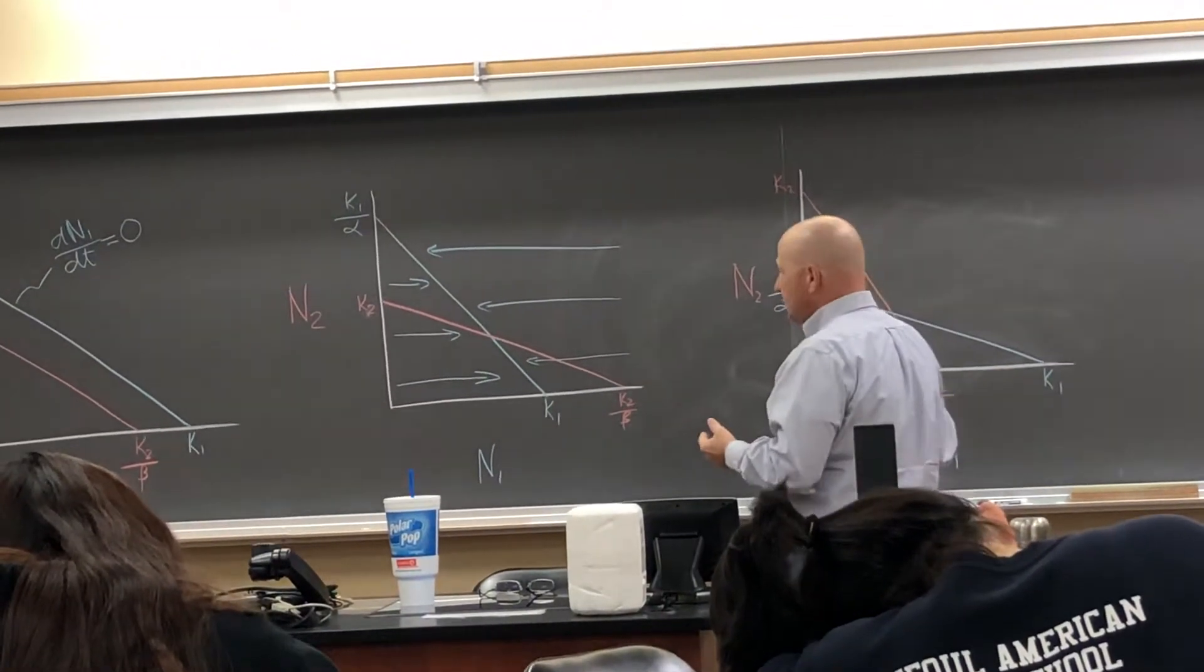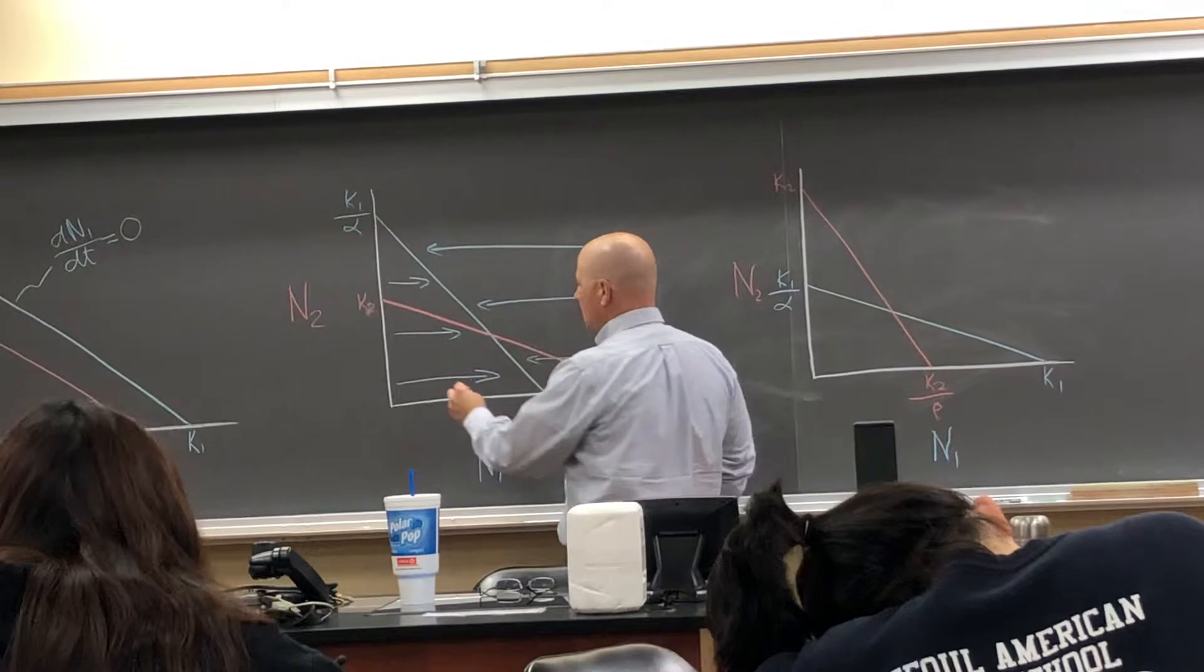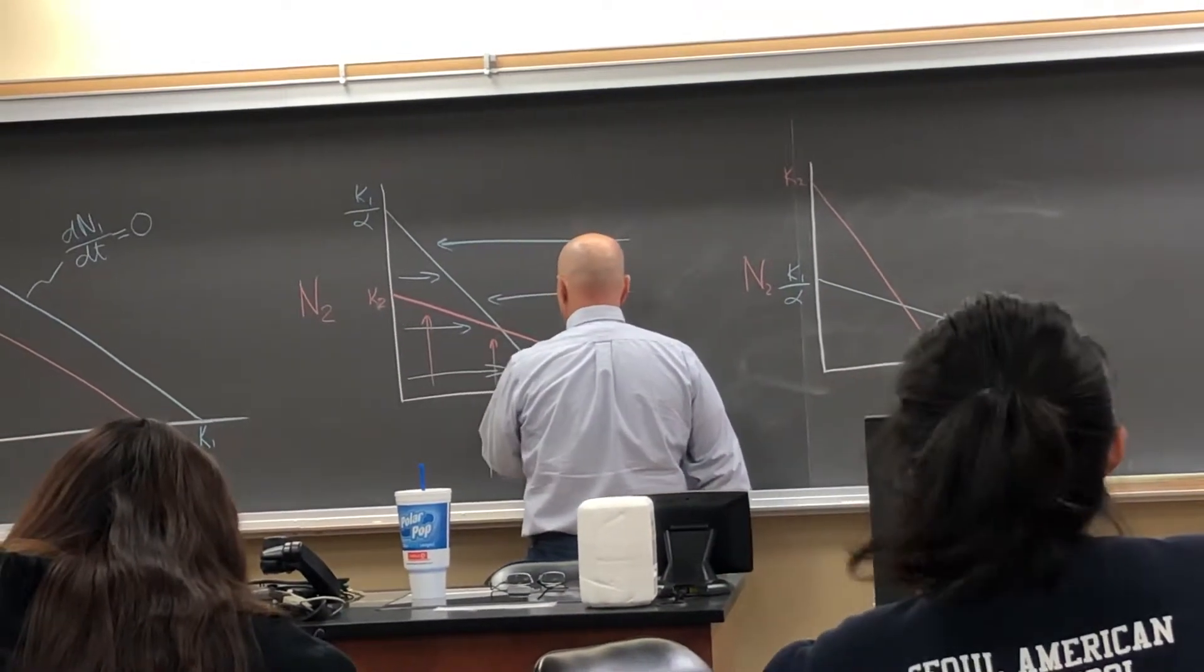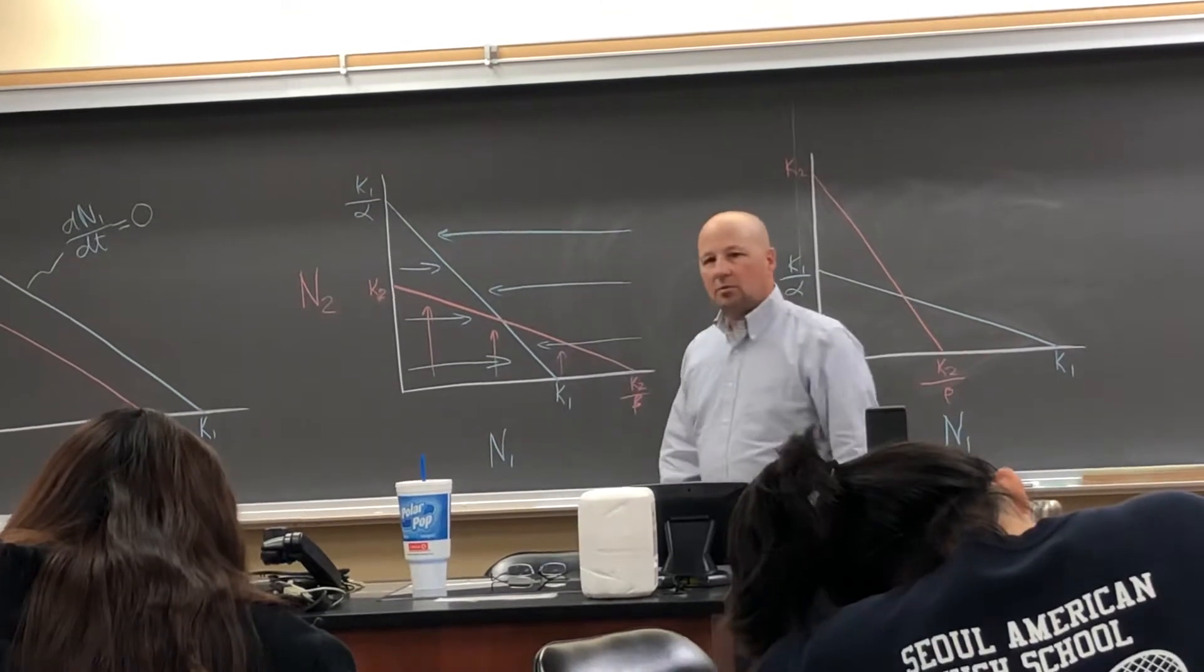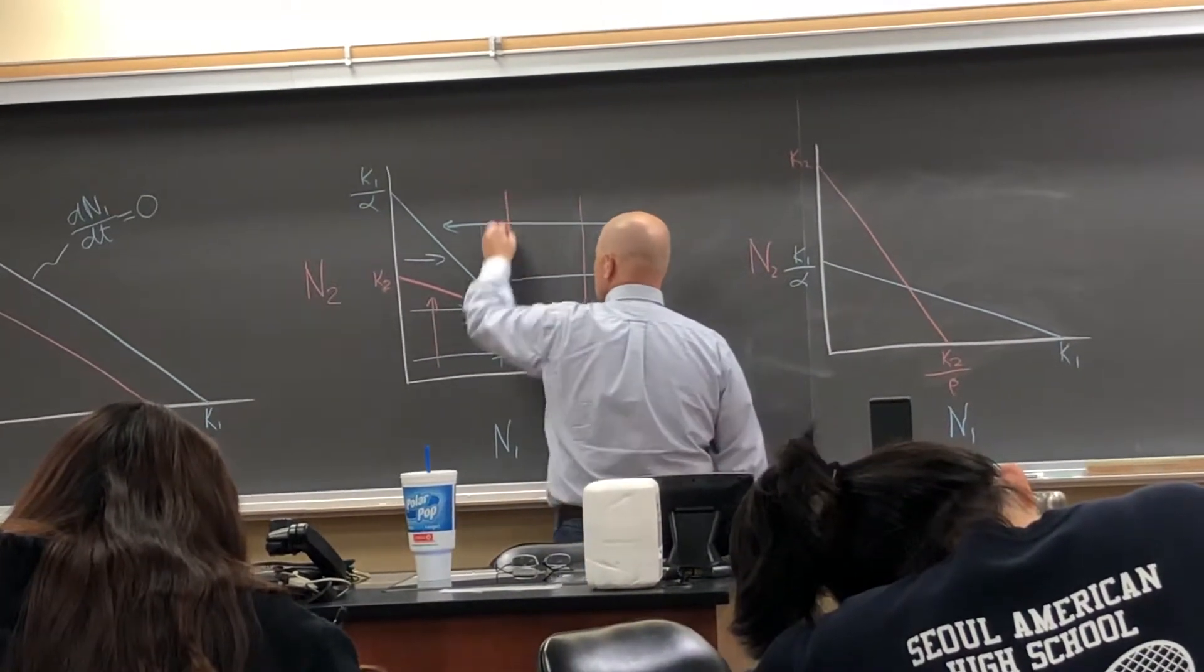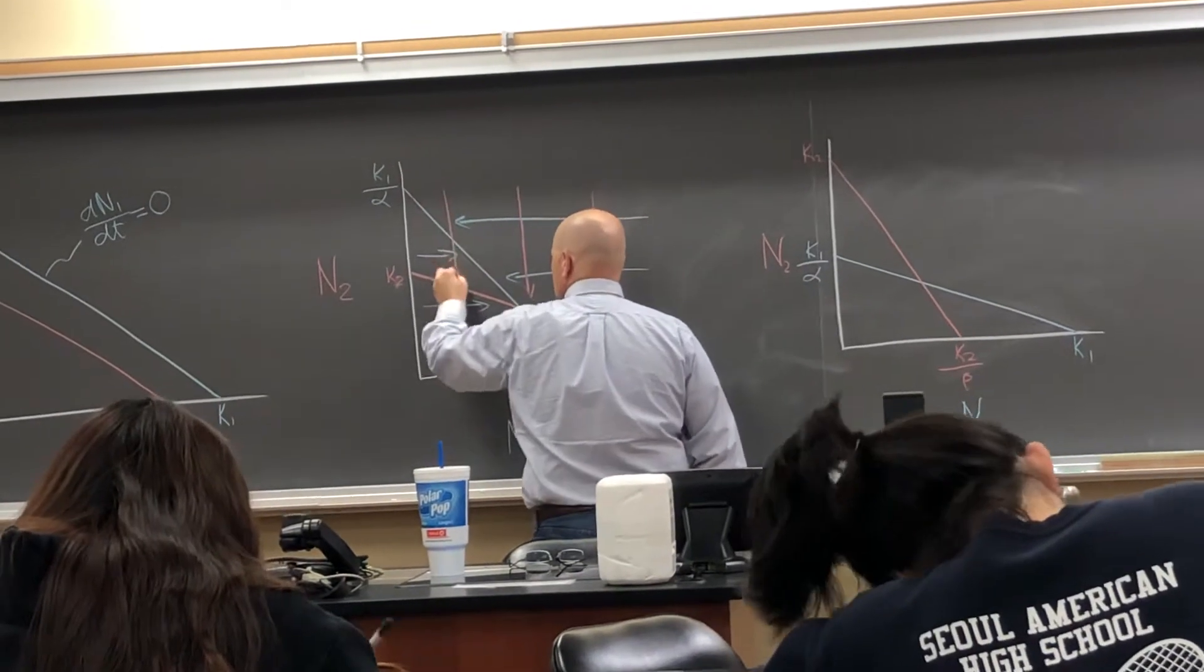Same thing for species 2. Anywhere under the red line, it's growing. The population has room to grow. Above the red line, the population would decline. Exactly.